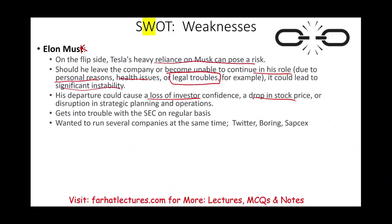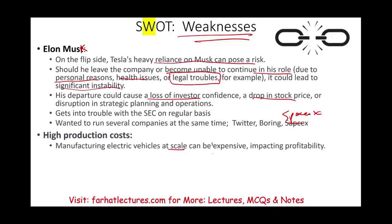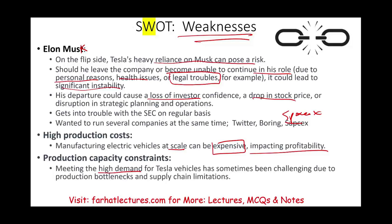Musk runs several companies like Twitter, Boring Company, and SpaceX — that's a weakness for Tesla. Also, Tesla has high production costs; manufacturing electric vehicles at scale can be expensive and impact profitability. There are also production capacity constraints: meeting the high demand for Tesla vehicles has been challenging due to production bottlenecks and supply chain limitations — and that is always the case.